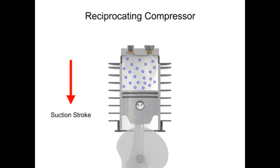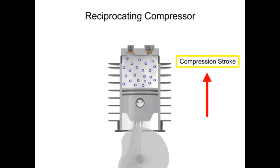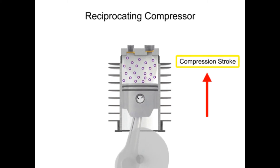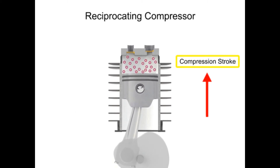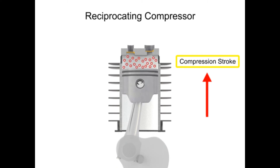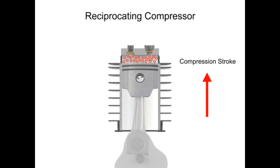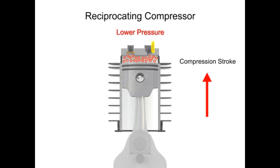As the piston begins its upward compression stroke, the volume within the cylinder decreases. The decrease in volume causes the pressure within the cylinder to increase. The increase in pressure opens the outlet valve and compressed air discharges from the cylinder.